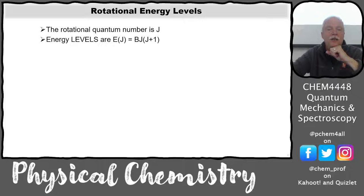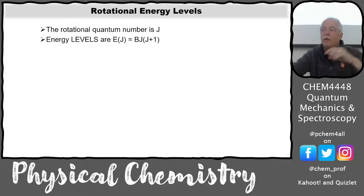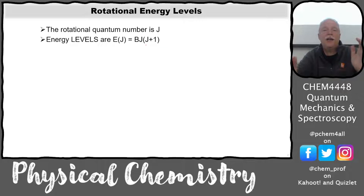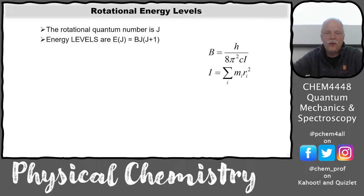For the rotational quantum number it's J, and here's the energy level equation. It's traditionally written as B times J times J plus one. It could also be written as B times the quantity J squared plus J — you could distribute that through — but this is the traditional way of writing it. B is the rotational constant.